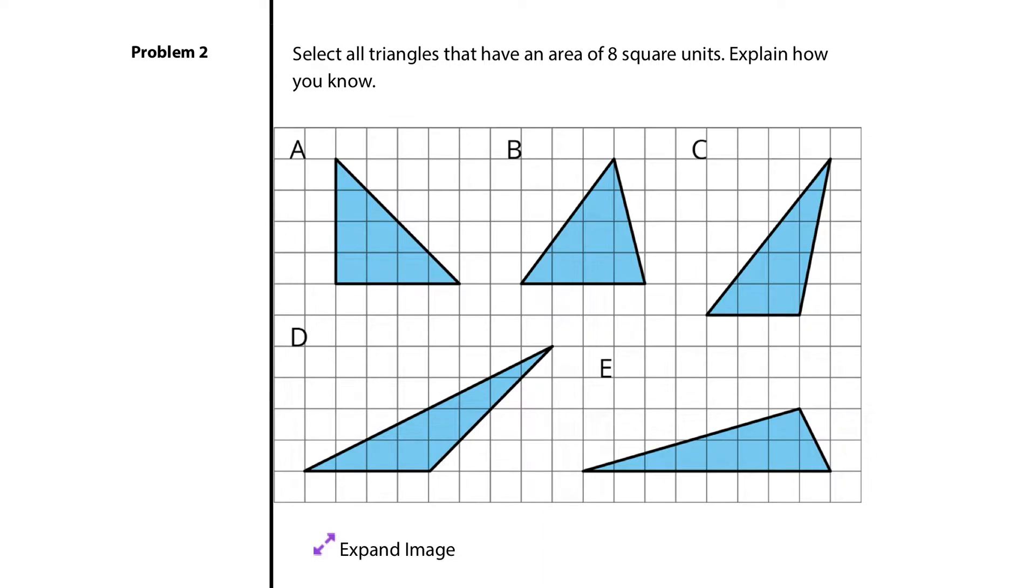In A, my base and my height meet at a right angle. Right there. My base is 4. My height is 4. And if I take area equals base times height and divide by 2.